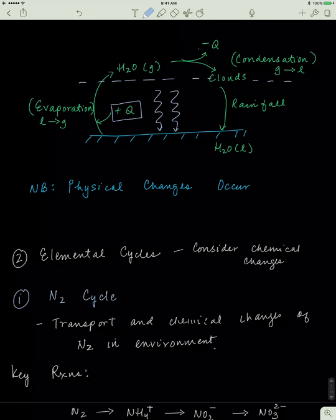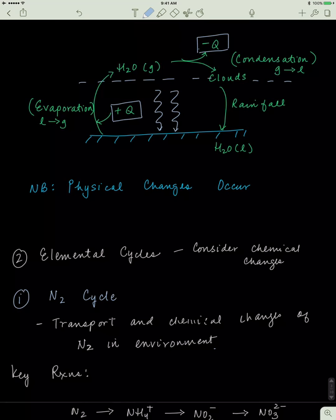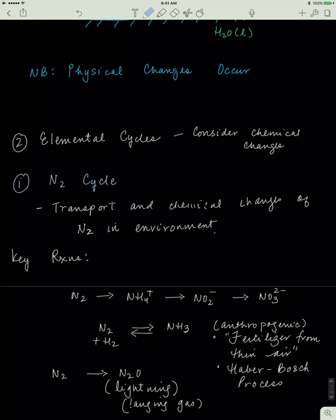Anyways, so in the atmosphere, we have our water, and it cools down, and we get cloud formation, and when it cools down, heat escapes. So that's why I have the minus Q over here. So then this gaseous water starts condensing. It forms clouds, and then when they reach this critical point, the water starts falling back down to the earth in the form of rainfall. This is the physical cycle. Physical changes are occurring in this hydrological cycle.